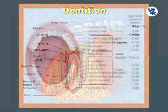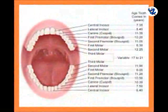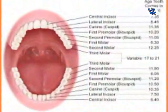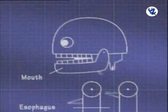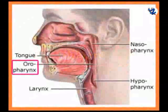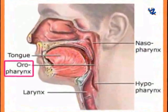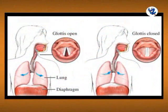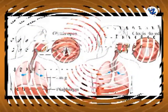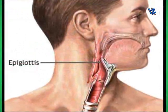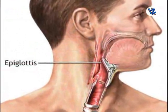Then dentition — it is the study of teeth with respect to their number, arrangement, development, etc. Teeth masticate the food and mix it with saliva. Then pharynx — it is the meeting point of the digestive and respiratory systems. Glottis is the opening of the respiratory system in the pharynx, guarded by a flap of tissue called epiglottis, which prevents food from entering the respiratory tract.